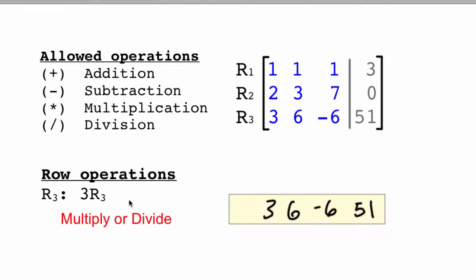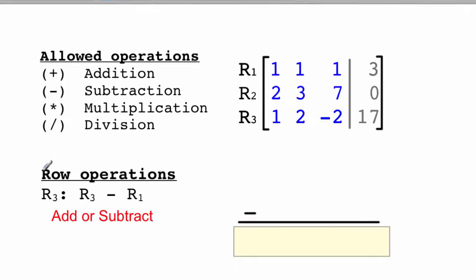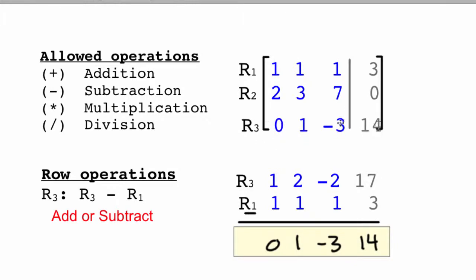And that's an example of multiplication. You can also add or subtract a row from another. Here, this means row 3 will be replaced by row 3 subtract away row 1. And so, bring down row 3 here. We're going to subtract away row 1. And here we've got 0, 1, 1 subtract negative 2, negative 3, and this is 14. And so, these will replace row 3.